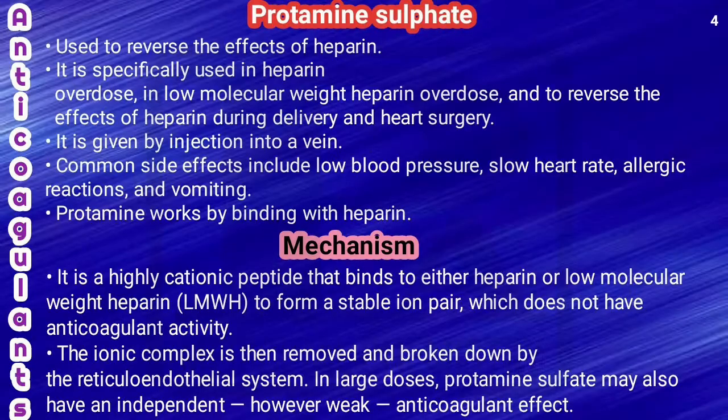Protamine sulfate is used to reverse the effects of heparin. It is specifically used in heparin overdose, low molecular weight heparin overdose, and to reverse the effects of heparin during delivery and heart surgery. It is given by injection into the vein. Common side effects are low blood pressure, slow heart rate, allergic reactions, and vomiting.